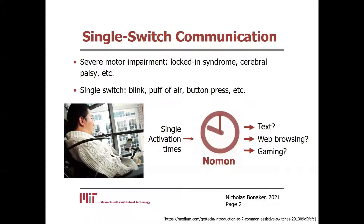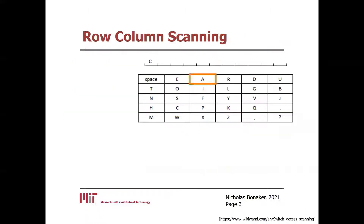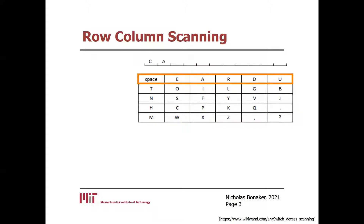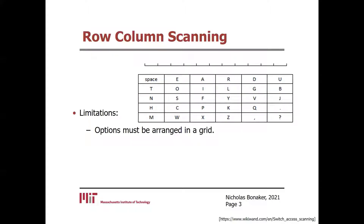I'll show the results of our recent user study and how NOMON, our single-switch interface, can facilitate fast and flexible computer interaction by leveraging Bayesian methods. Row-column scanning is a popular interface among single-switch users. It allows users to select from a grid of options as it progressively scans through them in row-column order. For text entry, the grid is filled with letters and word completions that allow them to type. However, there are a few limitations. Firstly, options must be arranged in the grid, which poses a problem for tasks that are not grid-like in nature — for example, browsing the web, choosing among files, or playing a game.